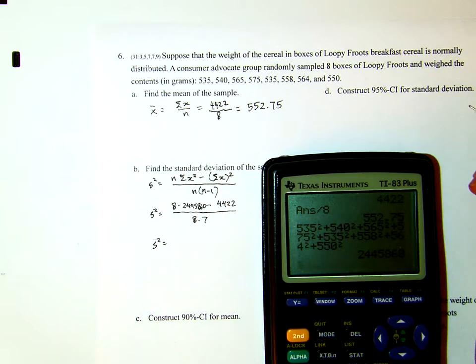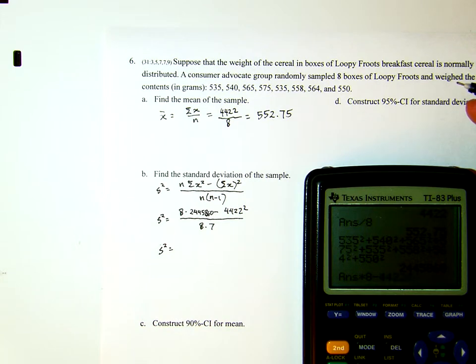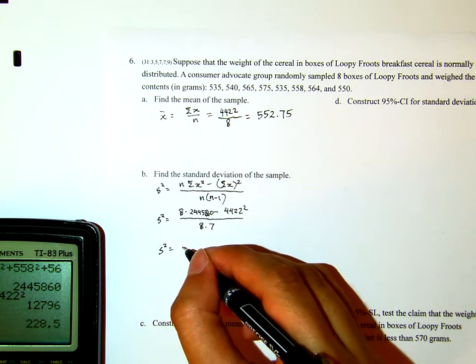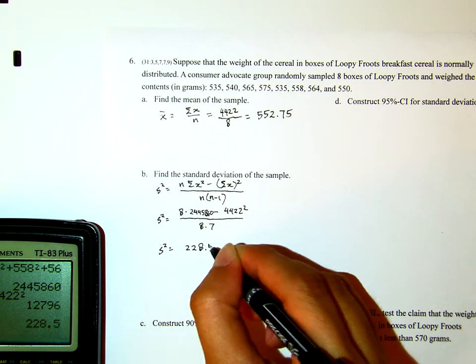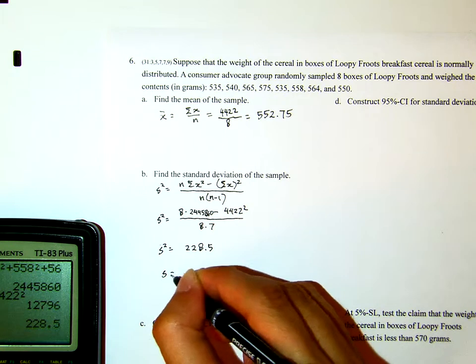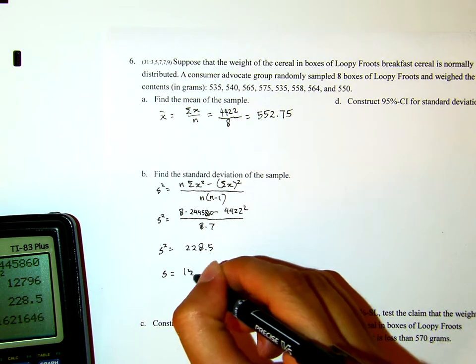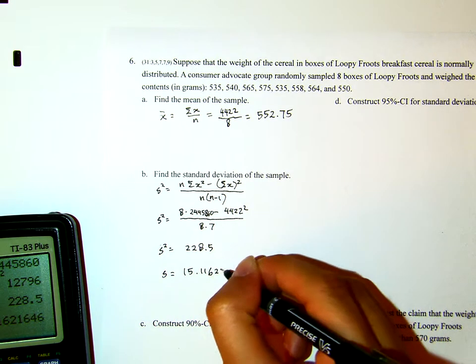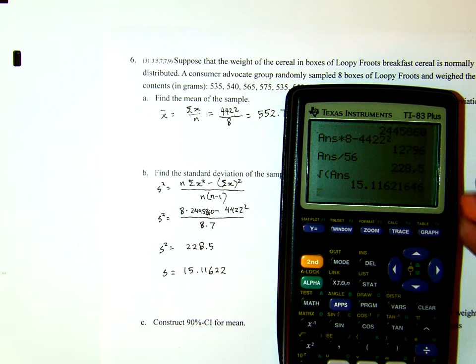So s squared, the sample variance, will be 8 times 2,445,860 minus 4422 squared, divided by 56. The sample variance equals 228.5. Therefore, the sample standard deviation is the square root of that, which equals 15.11622.